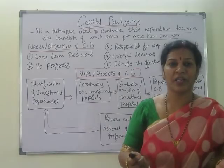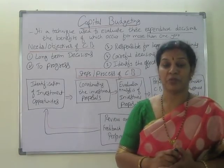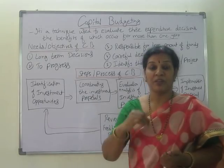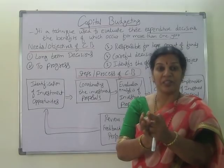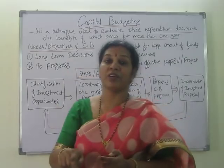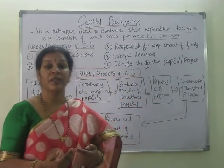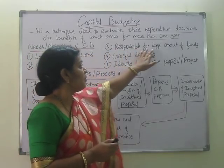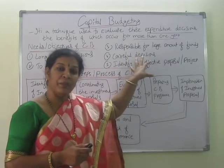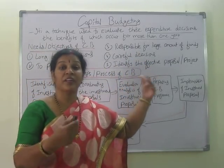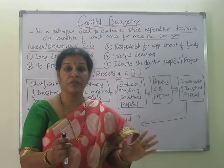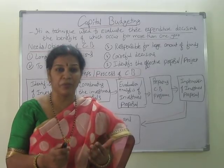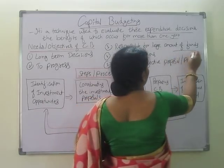The next objective is progress. Every organization wants some progress — without progress they can't run, they can't exist, and they can't survive in business. To have progress, we have to utilize our finance properly — where to invest and how to utilize it. So we focus on this area. Another objective is being responsible for large amounts of funds. In capital budgeting we discuss long-term, large-amount investments only. Short-term funds don't affect the finance system of an organization as much, so we focus only on large amounts of funds.